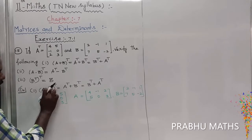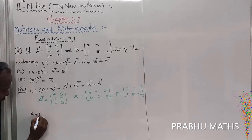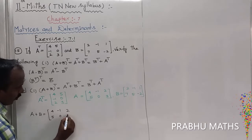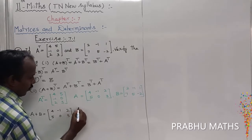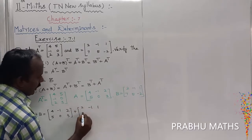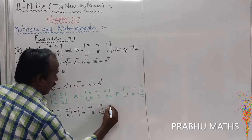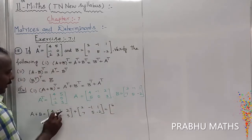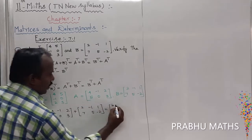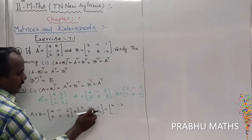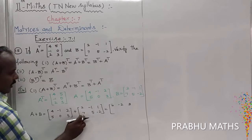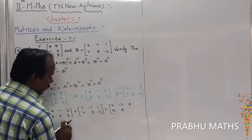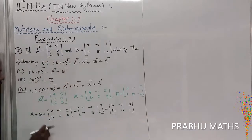First, find the left-hand side: A plus B the whole transpose. So find A plus B. A plus B equals the A matrix 4, minus 1, 2 and 5, 0, 3, plus the B matrix 2, minus 1, 1 and 7, 5, minus 2. Adding corresponding entries: 4 plus 2 equals 6, minus 1 plus minus 1 equals minus 2, 2 plus 1 equals 3, 5 plus 7 equals 12, 0 plus 5 equals 5, 3 plus minus 2 equals 1.